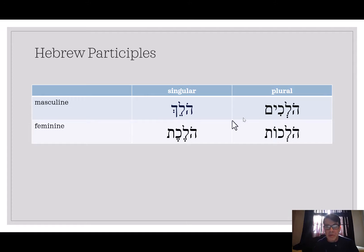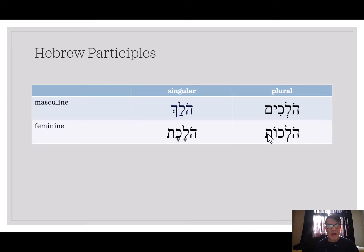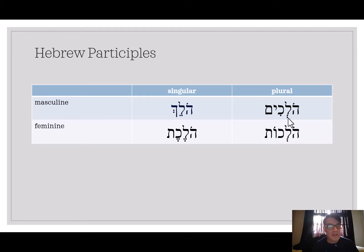These other endings are pretty easy to remember. HIRIK YOD MEM — that's a masculine plural ending you already know. We've seen it on nouns and adjectives. And HOLM Vav TAV as a feminine plural ending — we've seen that too. So there's the HOLM after the first letter, there's the reduced vowel — that's a vocal schwa — HOLAKIM or HOLAKOT. Easy, because we already know those endings.